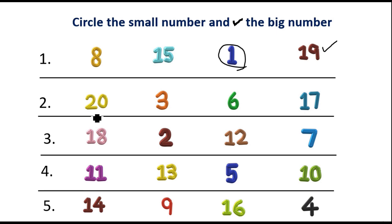Second one: 20, 3, 6, 17. Which is small? Yes, 3 is small. So circle 3. Which is big? 20 is big. So tick 20.